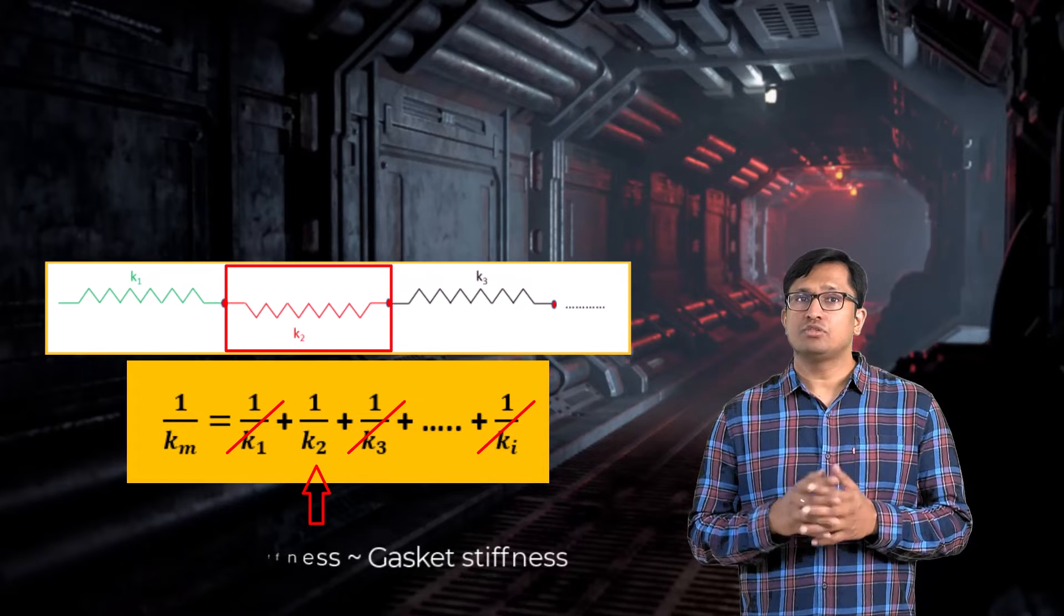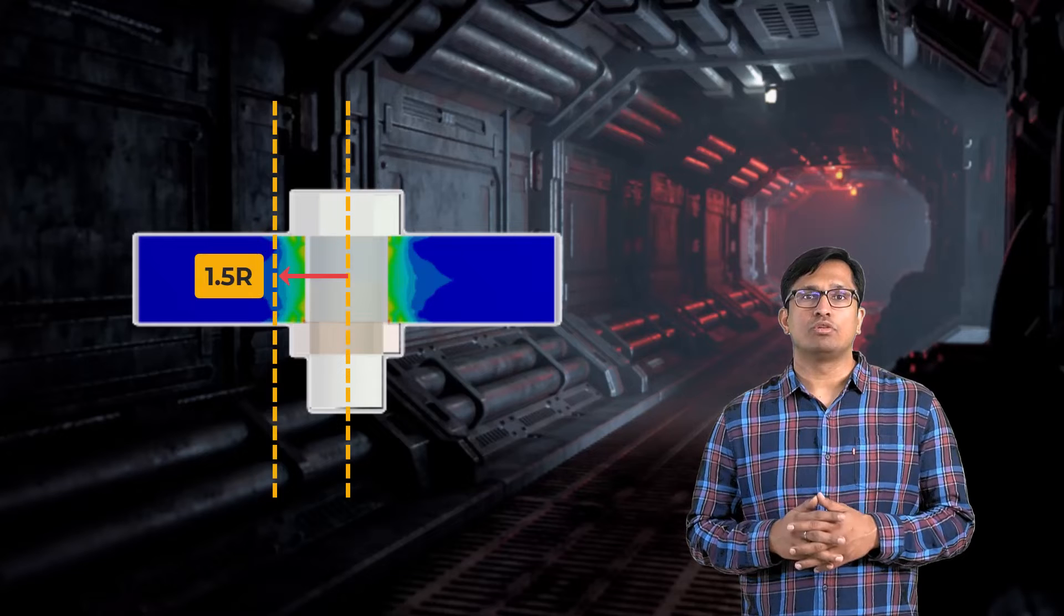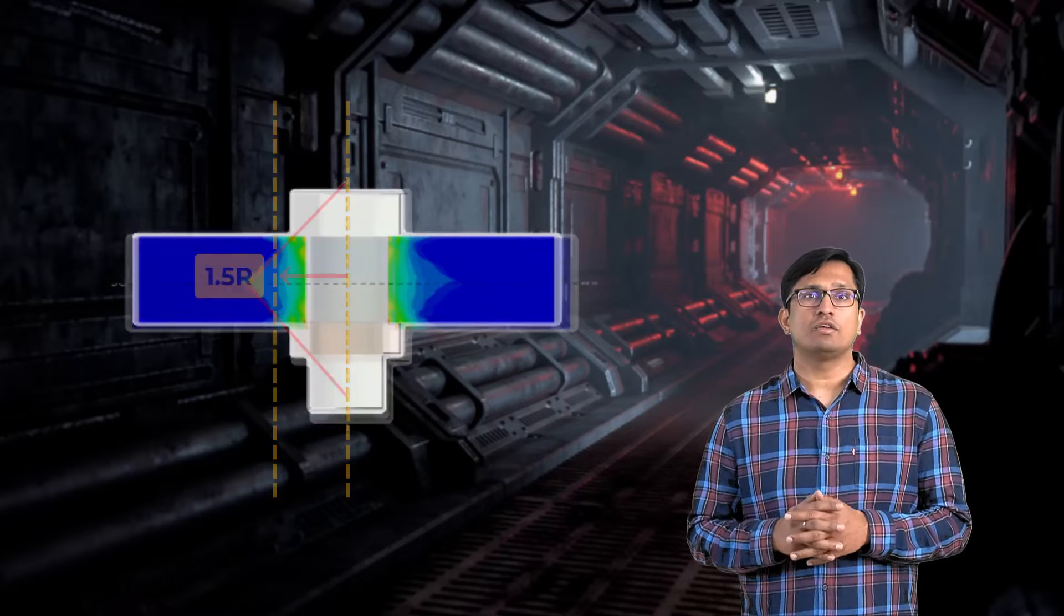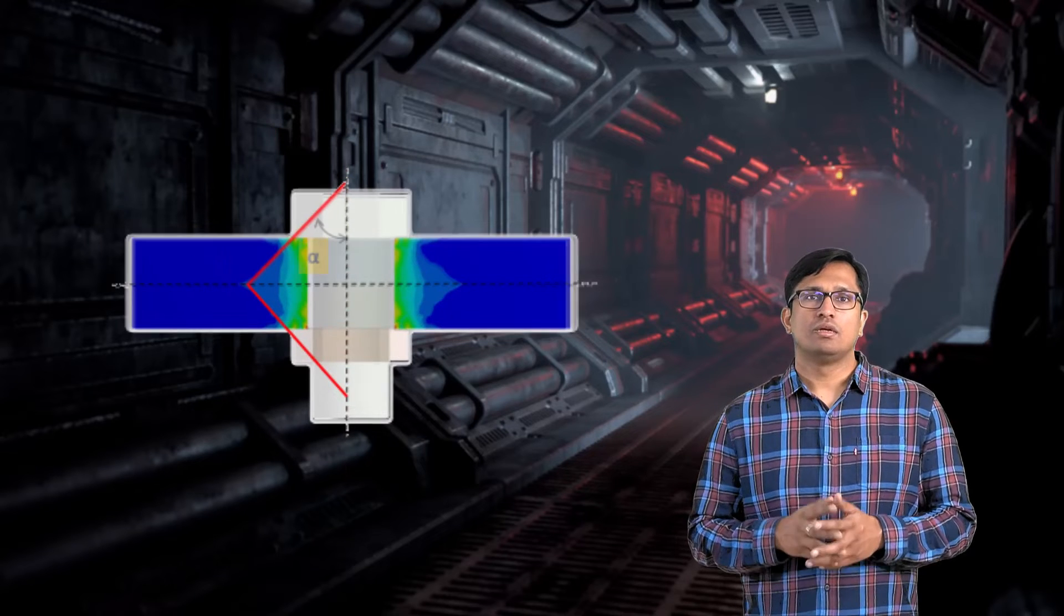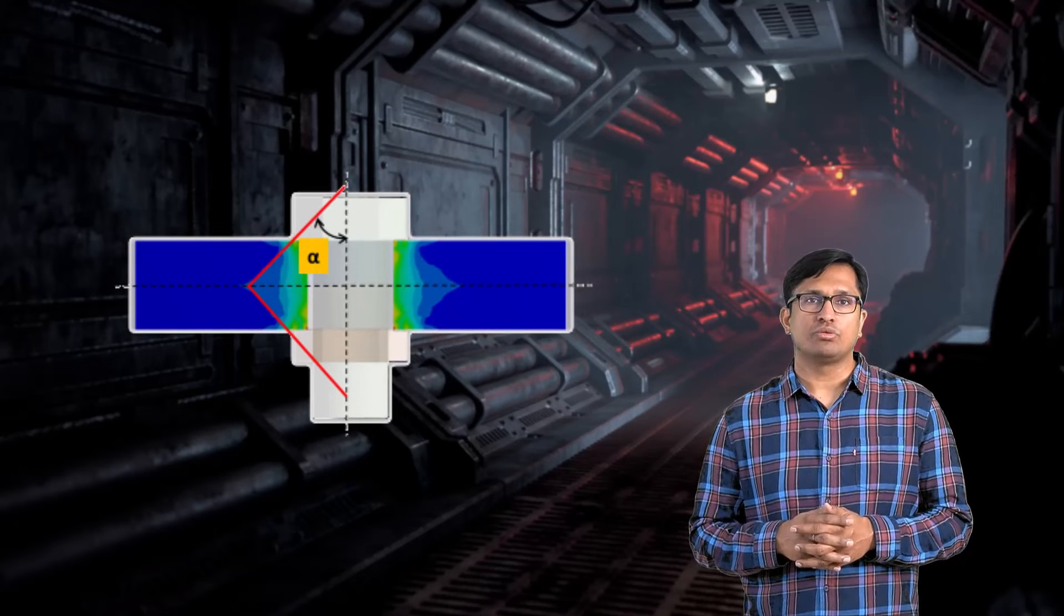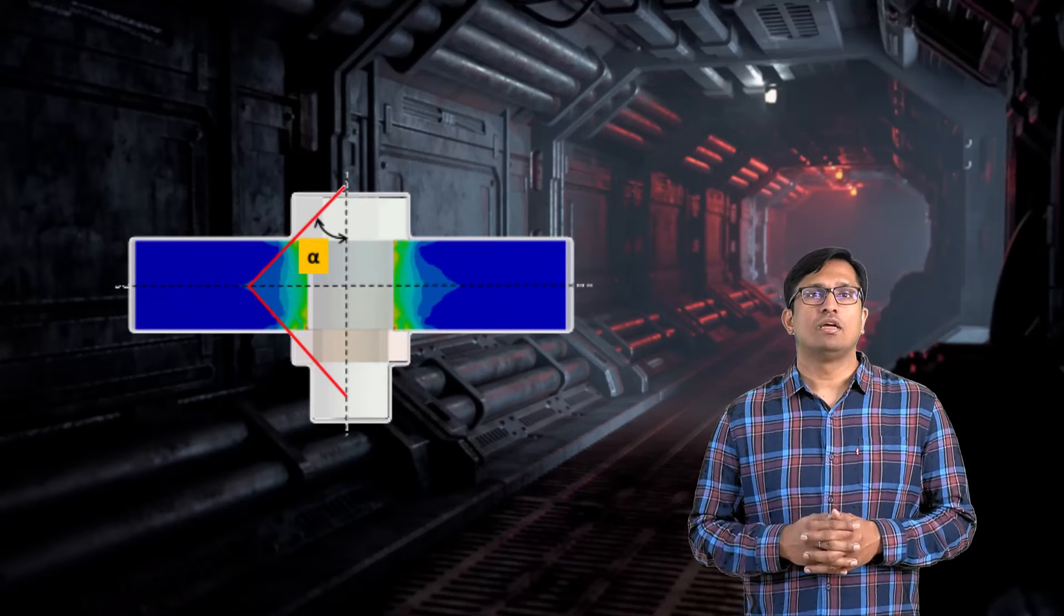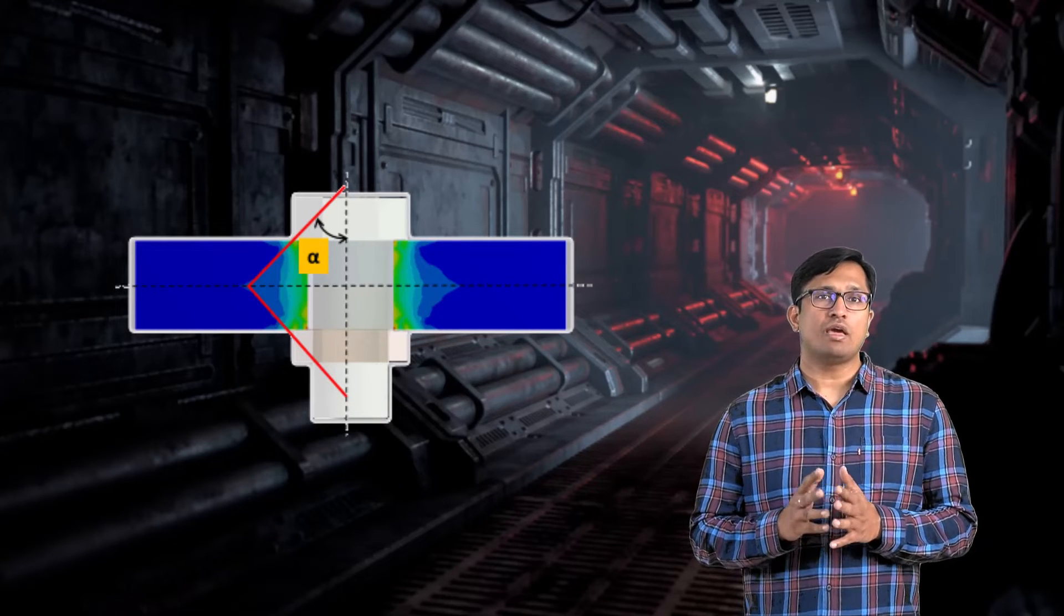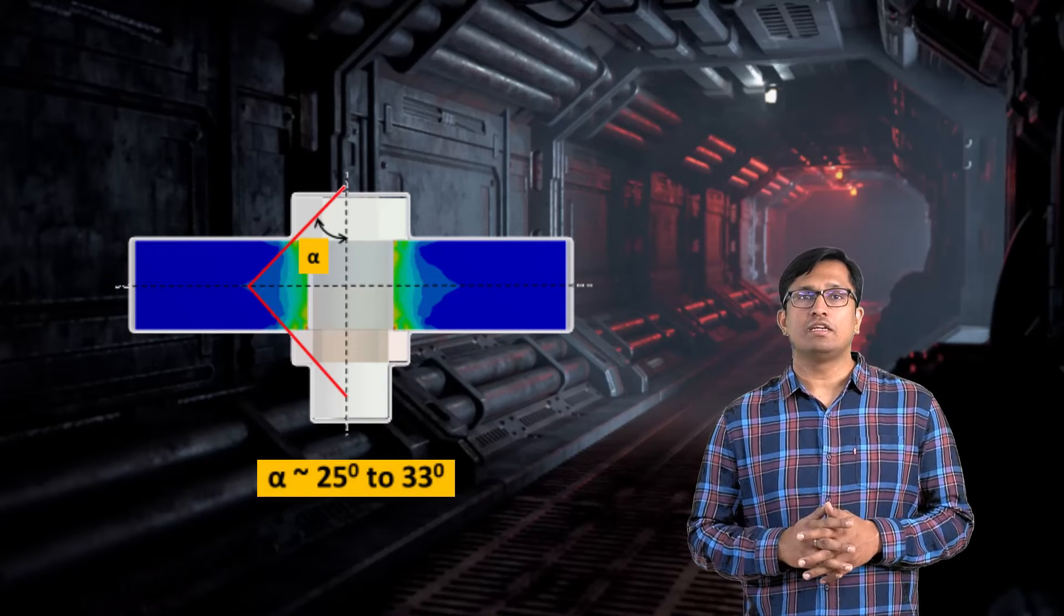In the absence of any gasket, we use the observation that pressure in the clamped part stays high till about 1.5 bolt radii and falls off farther away from the bolt forming a pressure cone as shown here. The half apex angle of the pressure cone is used to calculate the stiffness of each clamped part. In most cases, the half apex angle is between 25 and 33 degrees.